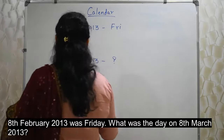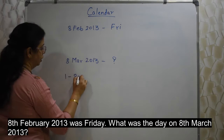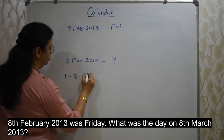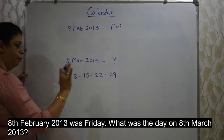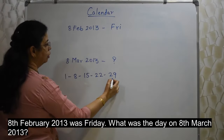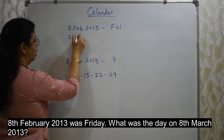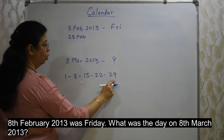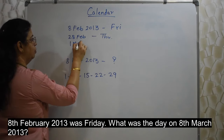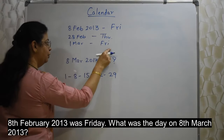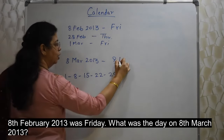Method 1 is jumping. The gap between 8th February and 8th March is one month. The days on 1st, 8th, 15th, 22nd and 29th fall on the same day. Since 8th is Friday, 29th would also be Friday — but this is not a leap year, so there's no 29th. Therefore 28th must be Thursday, making 1st March Friday. Since 1st March is Friday, 8th March is also Friday. Answer: Friday.